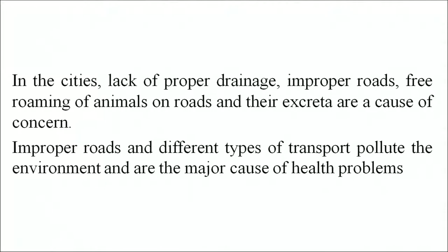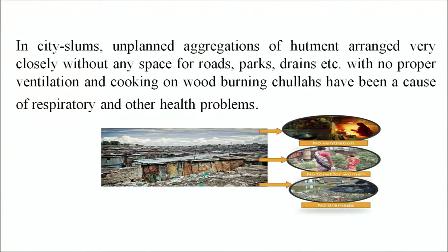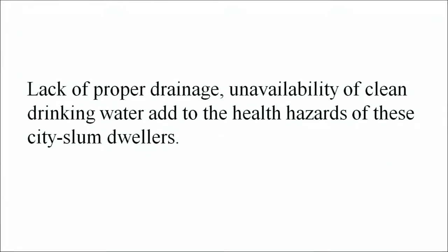In cities, lack of proper drainage, improper roads, free roaming of animals on roads and their excreta are a cause of concern. Improper roads and different types of transport pollute the environment and are a major cause of health problems. About one-fifth of the urban population resides in slums and one-third of the population does not even have access to sanitation and clean drinking water, which results in poor health. In city slums, unplanned aggregation of hutments arranged very closely without any space for roads, parks, drains, etc., with no proper ventilation and cooking on wood-burning chulas, has been a cause of respiratory and other health problems.